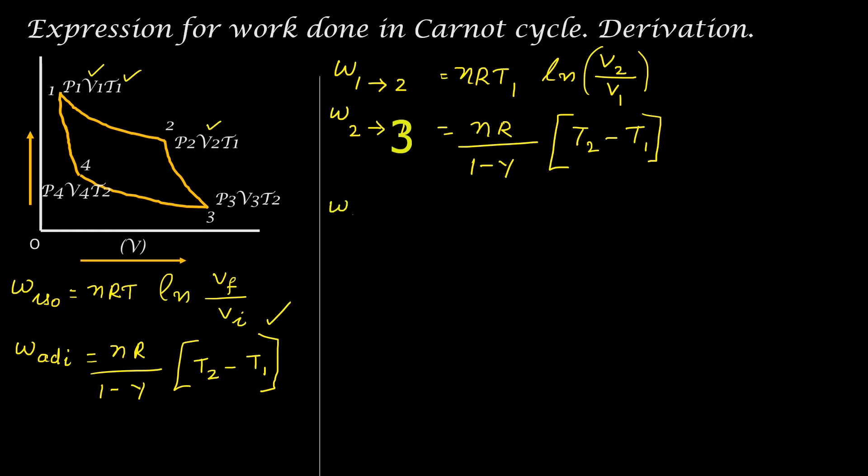Next is work done from 3 to 4, that is this process, that is isothermal compression. For compression work it is negative. So negative nRT2, what is the initial temperature? The initial temperature is T2, so T2 natural log, initial volume is V3, final volume is V4, so we get V4 by V3.